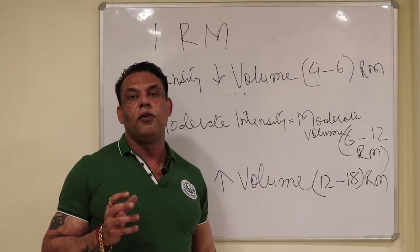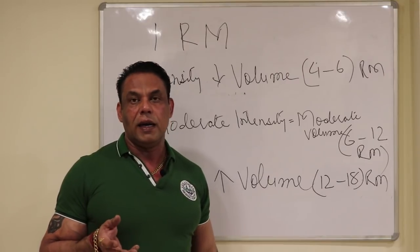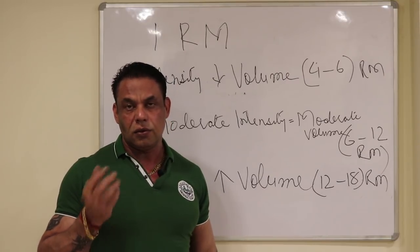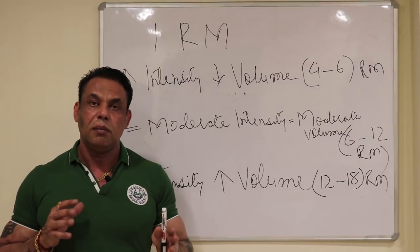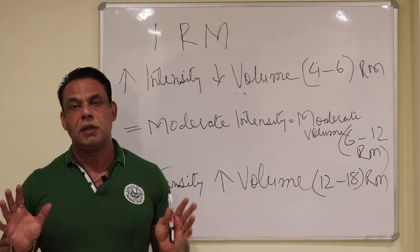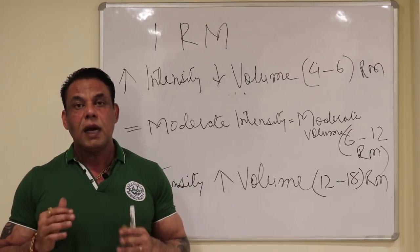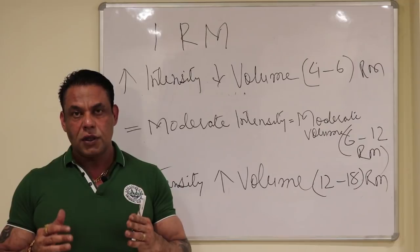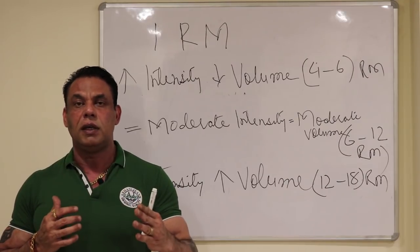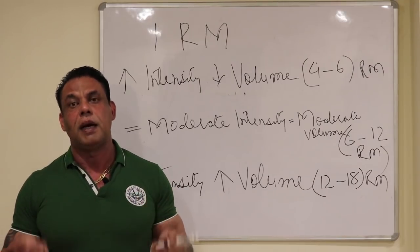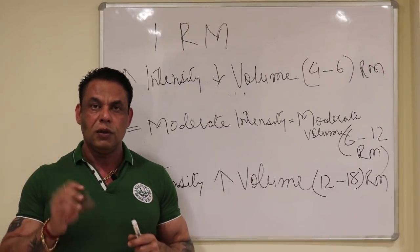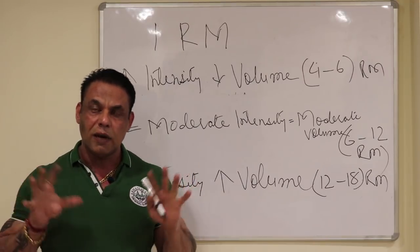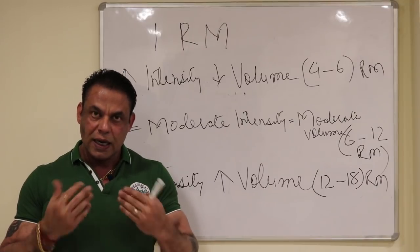There is more of rate coding, there is synchronization. As in that we have one repetition max, when we are taking so much load we can only do one repetition. In that time, neuromuscular coordination - nerves and muscle coordination - should be so perfect that we can do that repetition. In that, the nerves, how much they fire and how much they fire, so that is adaptation.